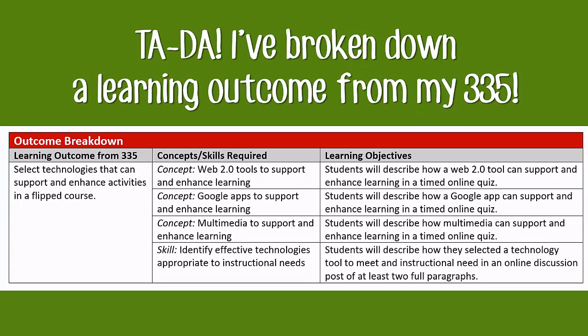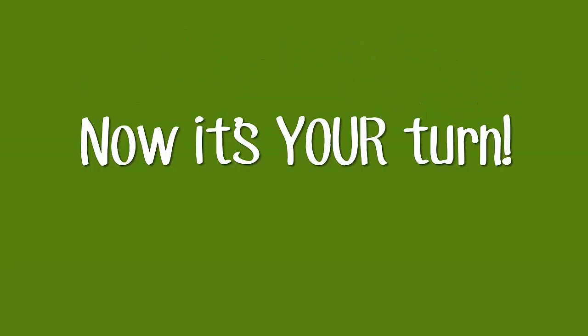I've broken down my learning outcome from my 335. You'll see this in the format of your outcome breakdown: the learning outcome from the 335 on the far left, concepts and skills in the middle, and finished learning objectives on the right. Now it's your turn — choose a learning outcome from your 335. Pick one that's a higher level of thinking so you really get to explore how to use Bloom's Taxonomy and the ABCD format. Don't forget, you can always reach out to any member of the CDI team for help.